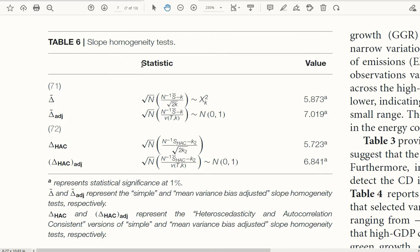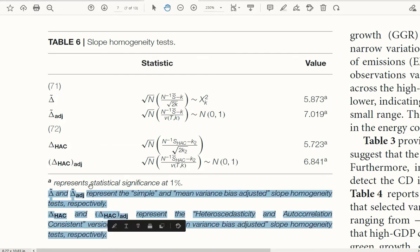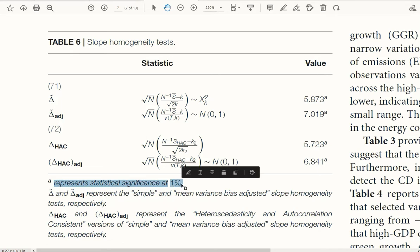Here we can see the tests. So zooming in, we have the first test and its adjusted version and the HAC version and the HAC version with the adjustment. These are the notes that you can pause the video and read. A represents statistical significance at 1%. And these are the formulas of these statistics.